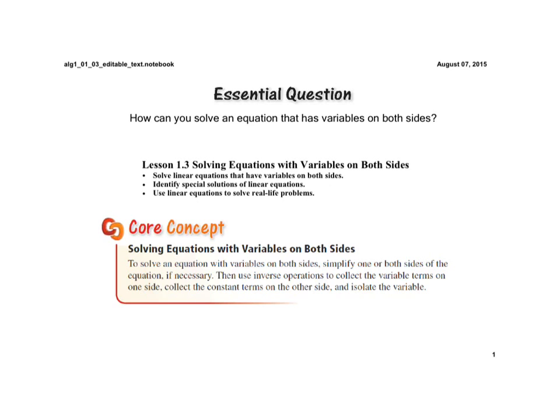The core concept is solving equations with variables on both sides. To solve an equation with variables on both sides, simplify one or both sides of the equation if necessary, then use inverse operations to collect the variable terms on one side, collect the constant terms on the other side, and isolate the variable.